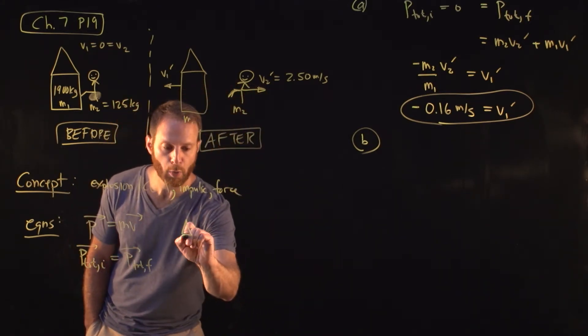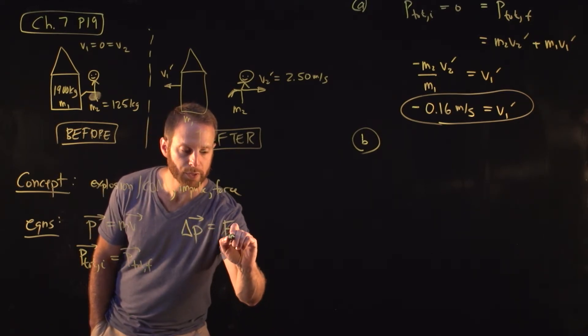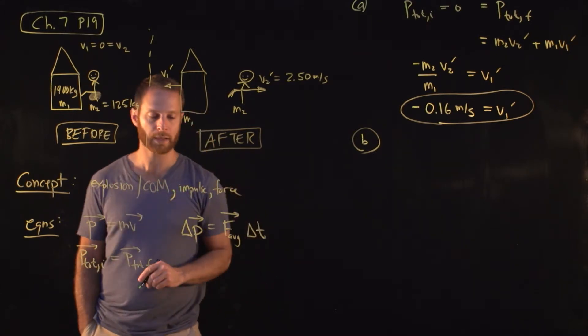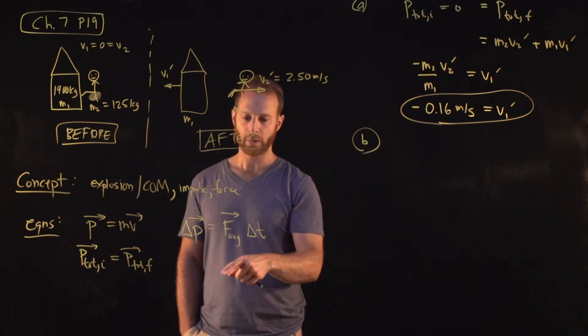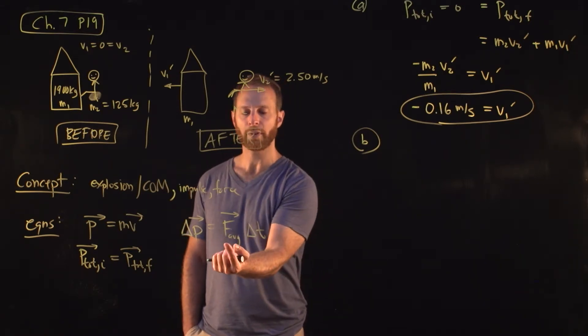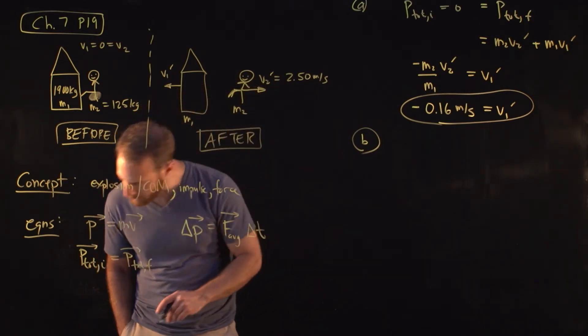So for that, let's remind ourselves that the change in momentum of any object, you can relate that to the average force acting on that object times the amount of time that the force has acted for. Since we can figure out the change in momentum for either of these objects, we know the amount of time that's given to us in the problem. We can therefore figure out the average force on that object. So let's go ahead and do that.